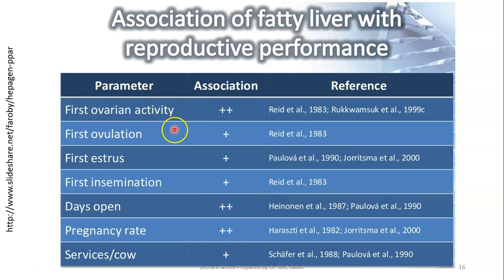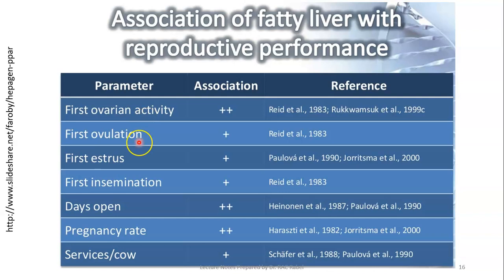Fatty liver has been shown to have a strong statistical association with first ovarian activity, first ovulation, first estrus, first insemination, days open, pregnancy rate, and services per conception. The plus marks indicate a positive statistical association, but the physiological impact is actually negative — fatty liver negatively affects first ovarian activity, prolongs time to ovulation, and so forth.